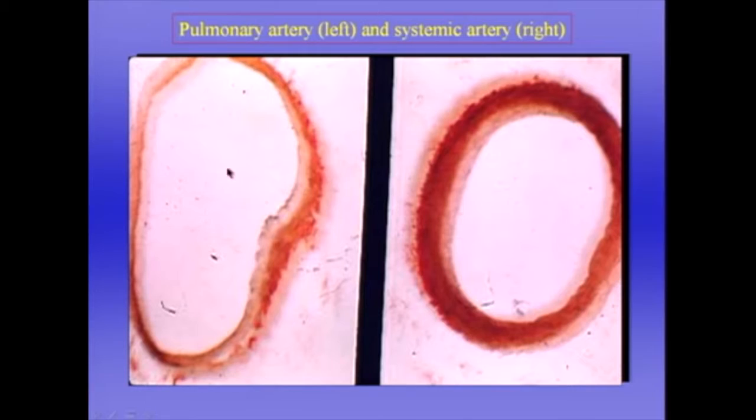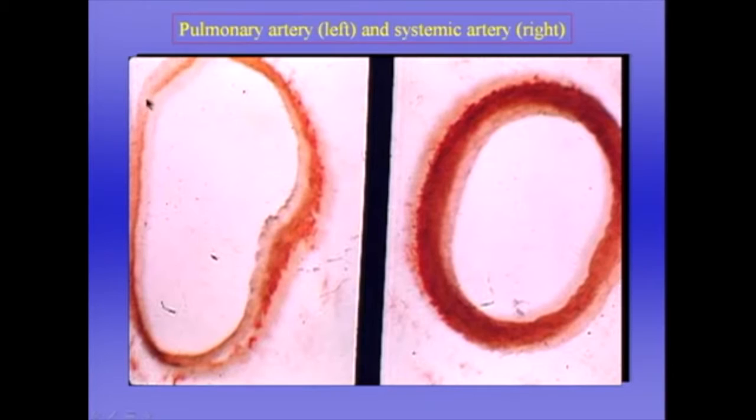The next slide shows a small pulmonary artery on the left, and alongside it is a systemic artery — an artery from the rest of the circulation, say from an arm or a leg. They have about the same calibre, though this one is slightly smaller. But you'll notice that the walls are completely different. The small pulmonary artery has rather thin walls. This is cut diagonally here, which makes it look a bit thicker, but they've got very thin walls, whereas the systemic artery has a very thick wall with a lot of smooth muscle.